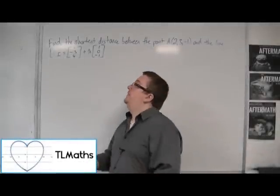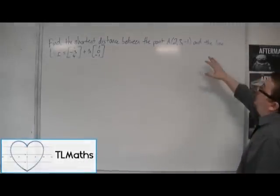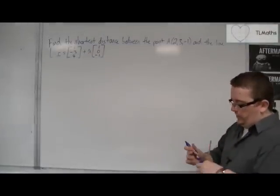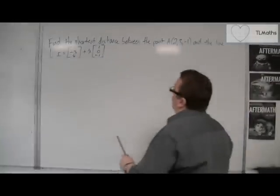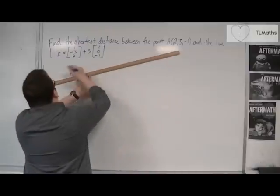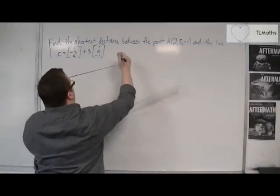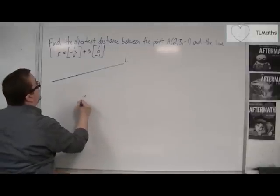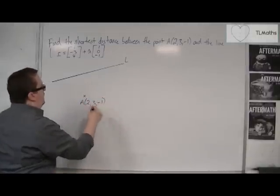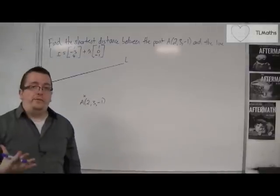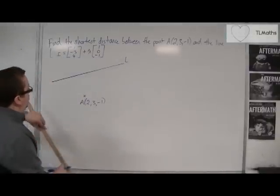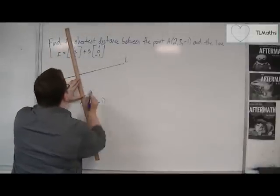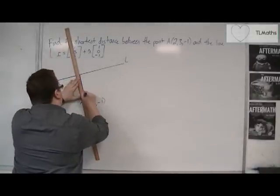Let's say we want to find the shortest distance between the point A at (2, 3, -1) and the line L. So let's draw a little diagram so that we can make sense of what's going on here. Here's the line L, and here is a point A. Effectively, what we want to do is find that shortest distance between the line and the point.